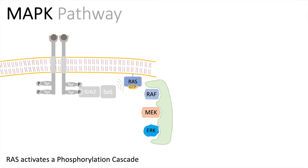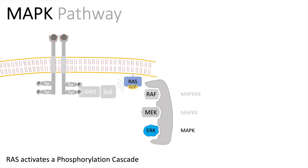Here we see a scaffold protein in green. This scaffold protein will facilitate the phosphorylation cascade by bringing the proteins into closer proximity. So RAS will activate RAF, which is the MAP kinase kinase kinase. The MAP kinase kinase kinase will phosphorylate MEK, the MAP kinase kinase. And MEK can then lead to the phosphorylation of ERK, our MAP kinase — so we have a phosphorylation cascade.